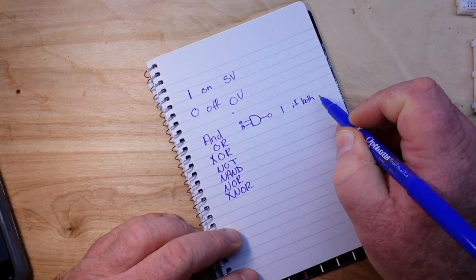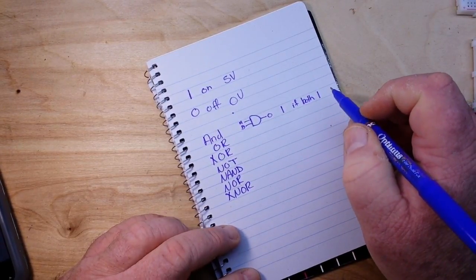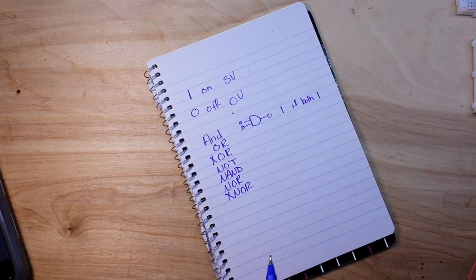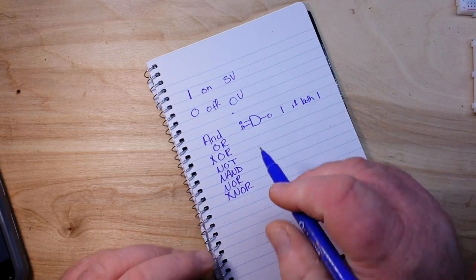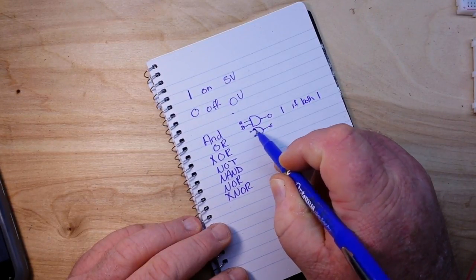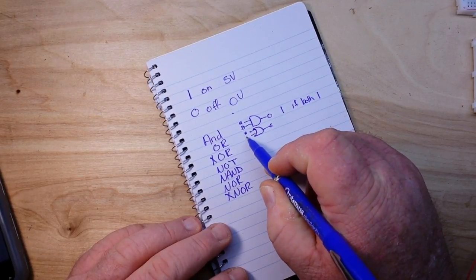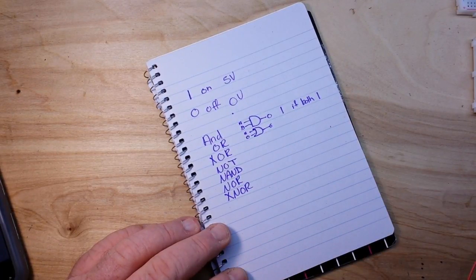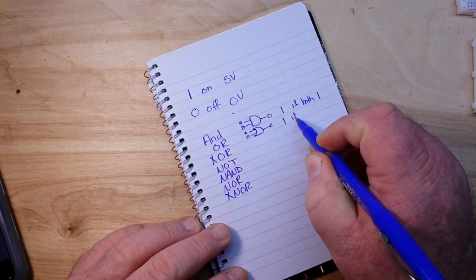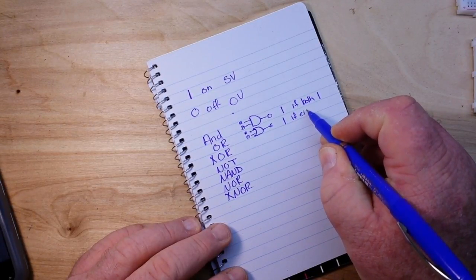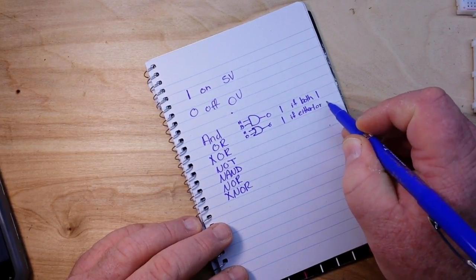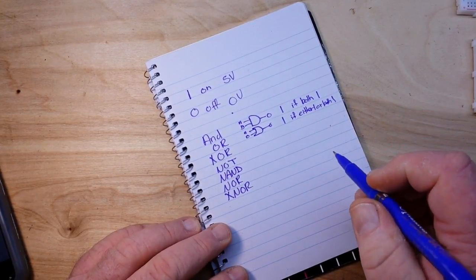Next we have the OR gate and it's drawn almost like the AND gate except it has that little half circle there. It gets its name from the logical inclusive OR. In this case the output is true if either input is true or both inputs are true.